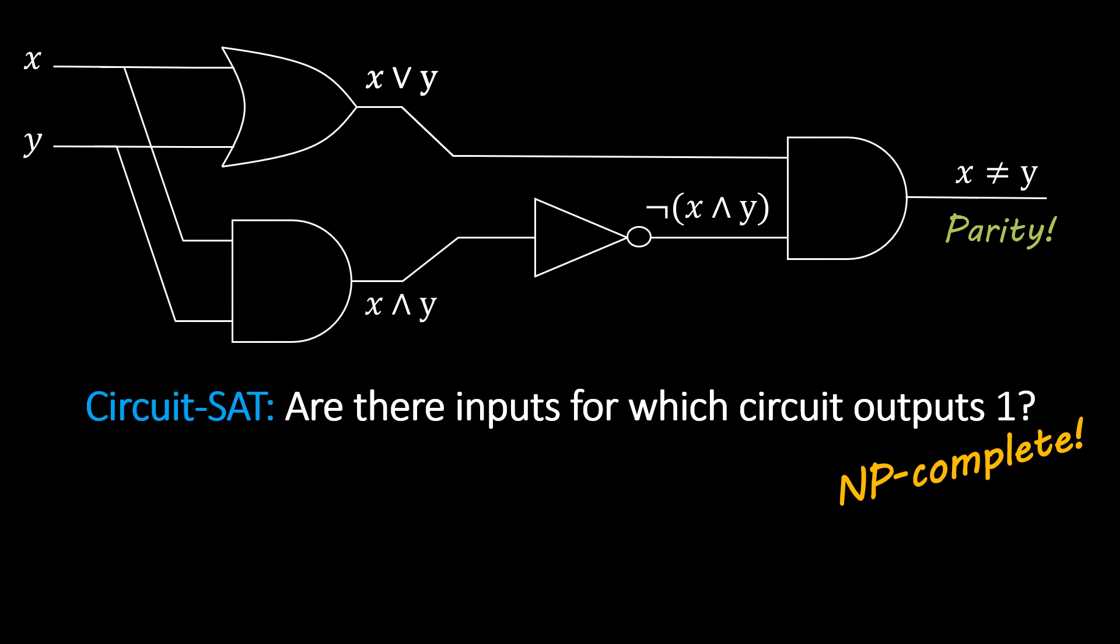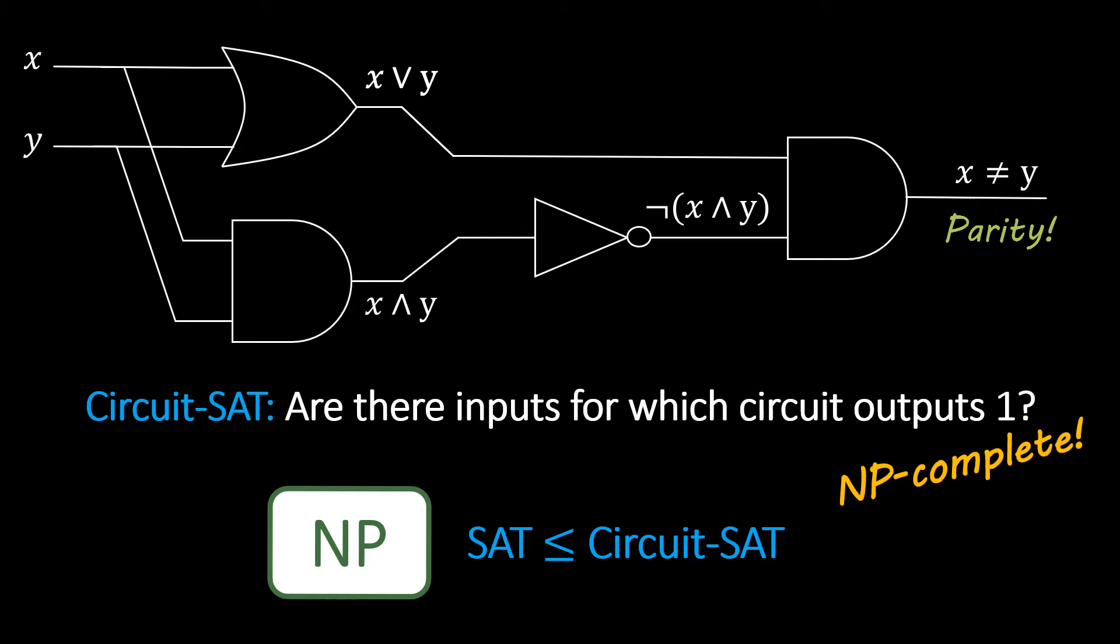To see this, first note that the problem is in NP, because any collection of inputs for which the circuit evaluates to 1 can act as a certificate. Moreover, a very simple reduction from SAT shows that it is also NP-hard. In particular, any boolean formula can be transformed into a boolean circuit by replacing the boolean operators with the corresponding logic gates.